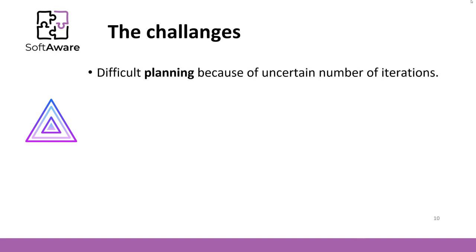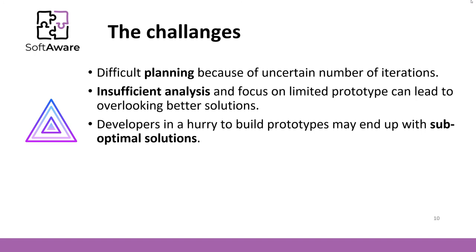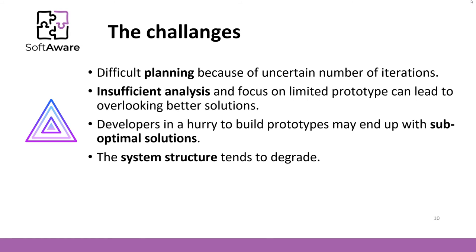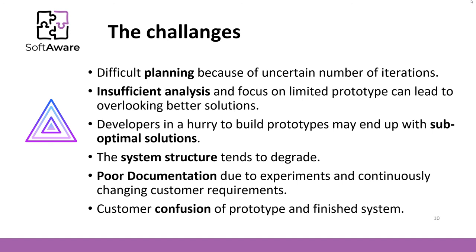On the other hand, there are challenges as well. This model is a risky one and has difficulties in planning because of the uncertain number of iterations. If the team focuses on prototyping, it can lead to overlooking better solutions. If we use rapid prototyping, developers may end up with suboptimal solutions because of the rush. The system structure tends to degrade if the team uses evolutionary prototyping — at some point the team might find out that they have chosen the wrong architecture to accommodate newly discovered requirements. Prototypes are not documented very well because of their nature. And sometimes there are issues with customers who do not understand prototyping and confuse a prototype with a finished system.